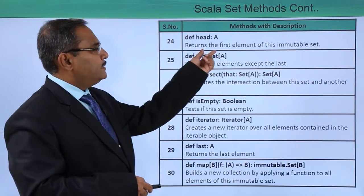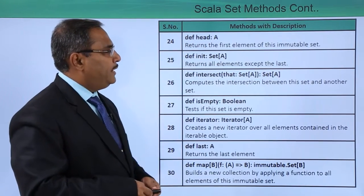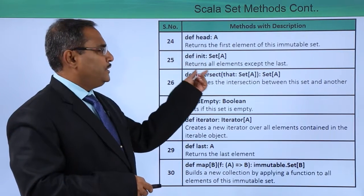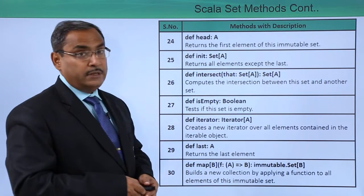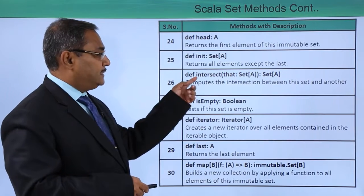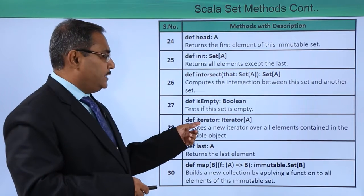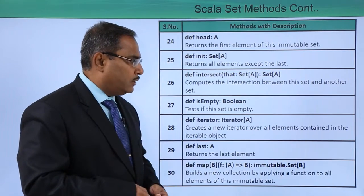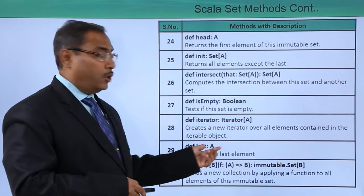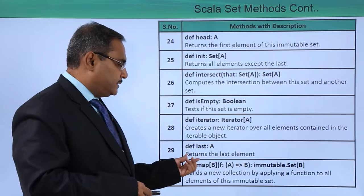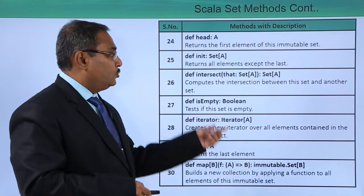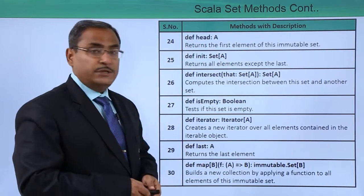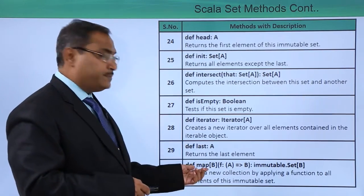We have head, which returns the first element of this immutable set. We have init, which returns all elements except the last. We have intersect and isEmpty. Iterator creates a new iterator over all the elements contained in the iterable object. Last returns the last element. Head returns the first element of this immutable set. We also have map.